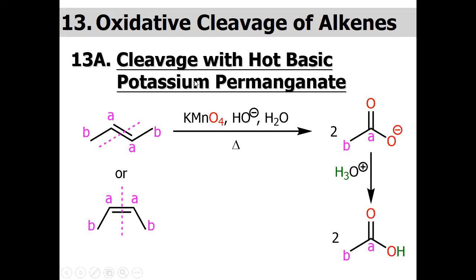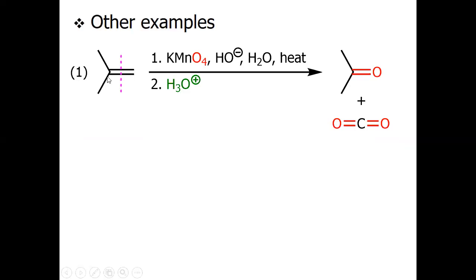When an alkene is treated with potassium permanganate under hot conditions we get oxidative cleavage. For a disubstituted alkene — whether trans or cis — we get the corresponding carboxylate salt, which on acidic workup gives the corresponding carboxylic acid depending on the carbons on both sides of the double bond. Another example: with 2-methylpropene under hot KMnO4 conditions, the terminal alkene carbon converts into carbon dioxide rather than formic acid, while the alkene carbon bearing two alkyl groups converts into a ketone compound.